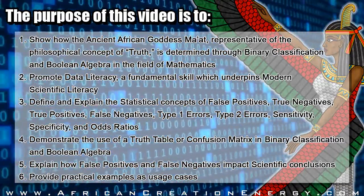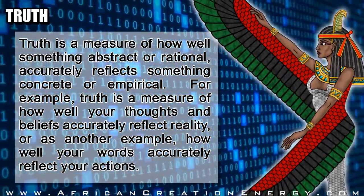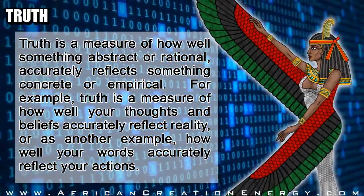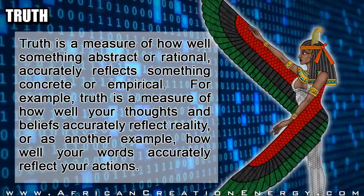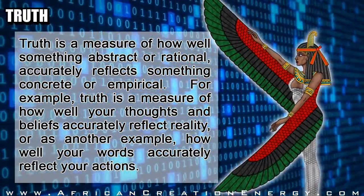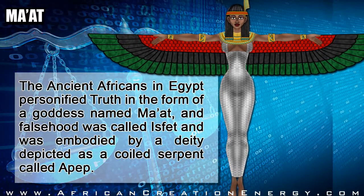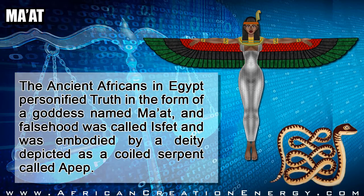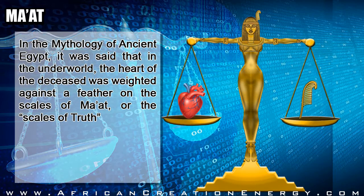Introduction: truth is a measure of how well something abstract or rational accurately reflects something concrete or empirical. For example, truth is a measure of how well your thoughts and beliefs accurately reflect reality, or how well your words accurately reflect your actions. The ancient Africans in Egypt personified truth in the form of a goddess named Ma'at, and falsehood was called Isfet, embodied by a deity depicted as a coiled serpent named Apep.